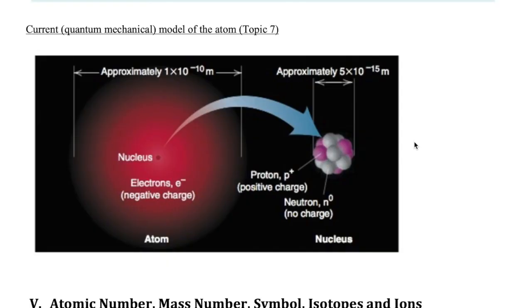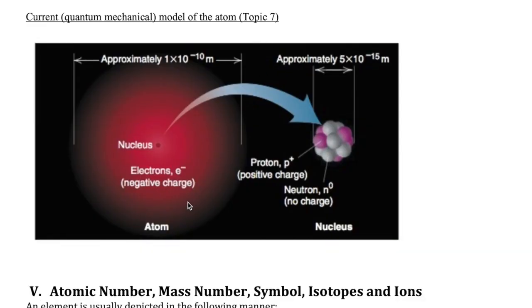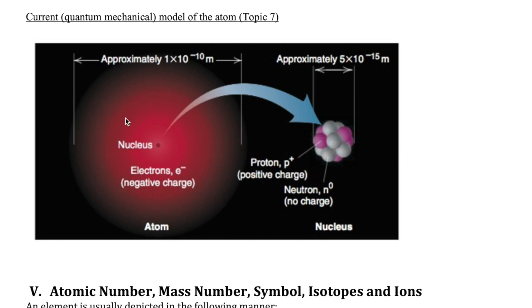When we get to topic seven, that's when we're going to talk about the idea that the electrons are not necessarily the classical particles that we think about — it's more unique than that, a sort of weird type of particle. So the model of the atom you want to have in mind is a nucleus in the middle composed of protons and neutrons, with electrons spread around that nucleus.